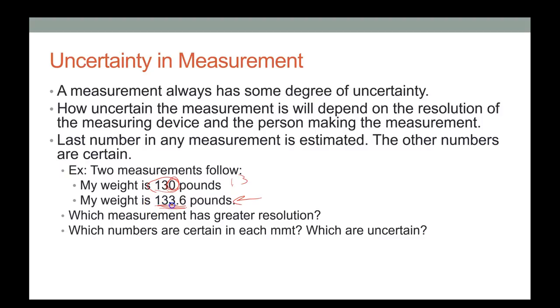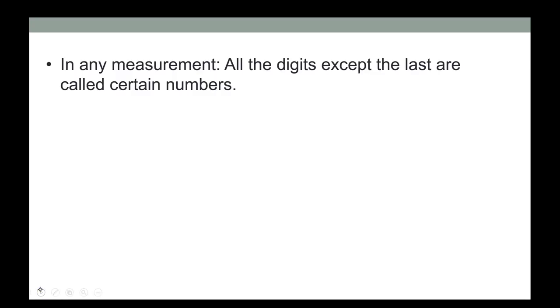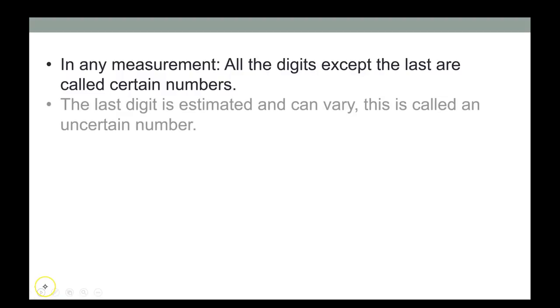On the digital scale, the 1, 3, and 3 are all certain numbers, and the 6 is the uncertain number. Anytime you make a measurement, all digits except the last are certain numbers; the last digit is estimated.